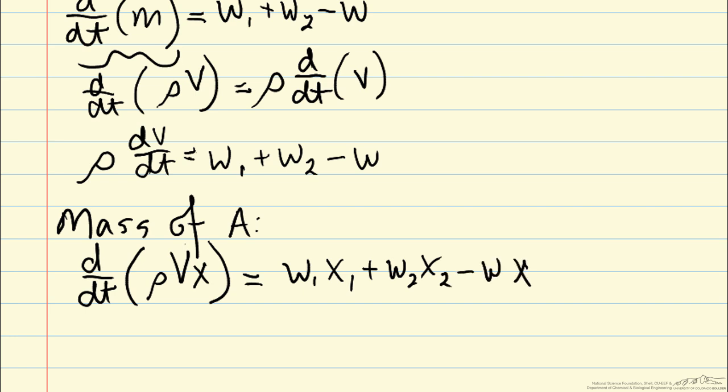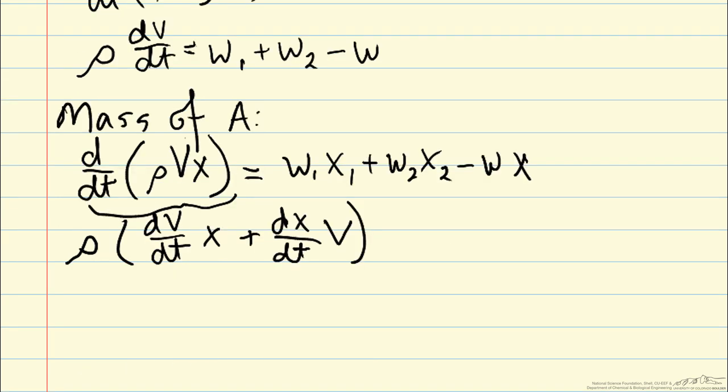And again, we can break down the mass of A by pulling out the rho. But now within our d dt term we have two time varying quantities, volume and mass fraction. So we'll need to use the product rule in order to break that down into our two different variables, X and V. So be very careful when pulling terms out of your d dt. Make sure they're constant before you pull them out of the d dt. So now we can write a balance equation, a dynamic equation for dX dt.